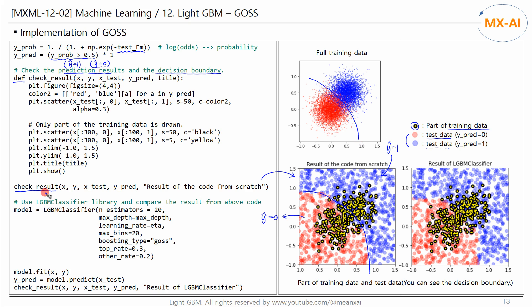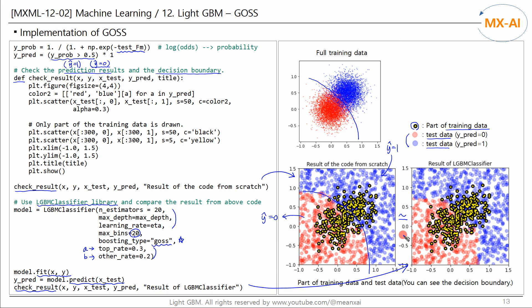Next, let's use the LightGBM library. Set the basic parameters the same as before, with 20 histogram bins. Set the boosting type to GOSS and configure parameters A and B. Fit this model to the training data, predict the target class of the test data, and check the result. The result is similar to the previous one. The reason the results are not identical is because the data was sampled.